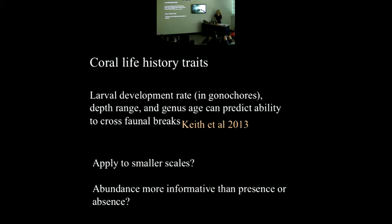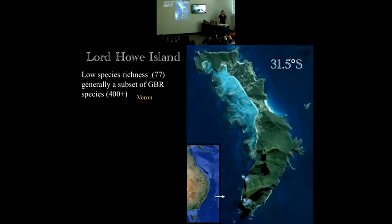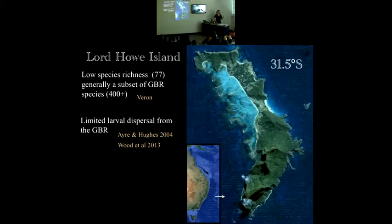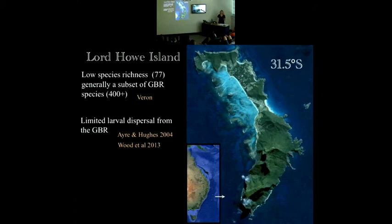I'm not just using presence-absence data — I'm looking at coral percent cover and abundance to see if a species can become abundant once it crosses a barrier. My area of interest was Lord Howe Island. It has very low species richness and is considered a marginal environment because it sits at the southern limit of coral distribution. It also experiences cold temperatures and a wide range of temperatures, and it's a known dispersal barrier to coral larvae, confirmed with genetic studies as well as models of larval dispersal.